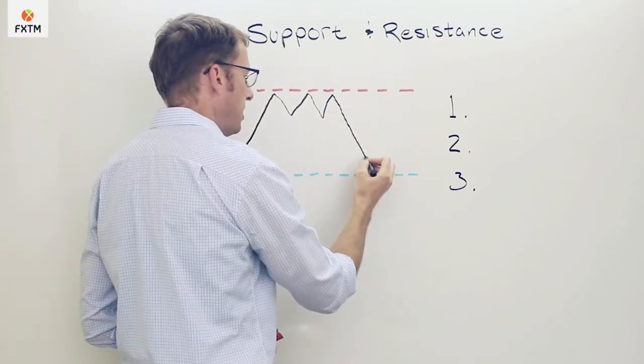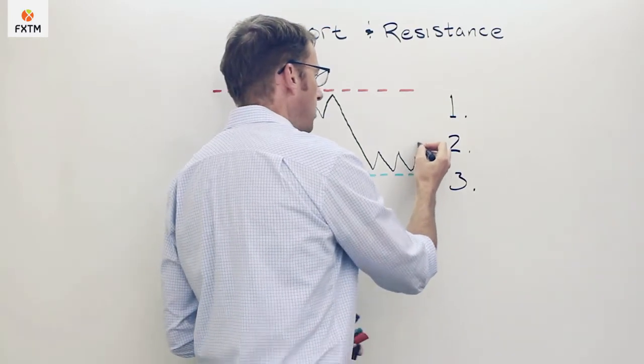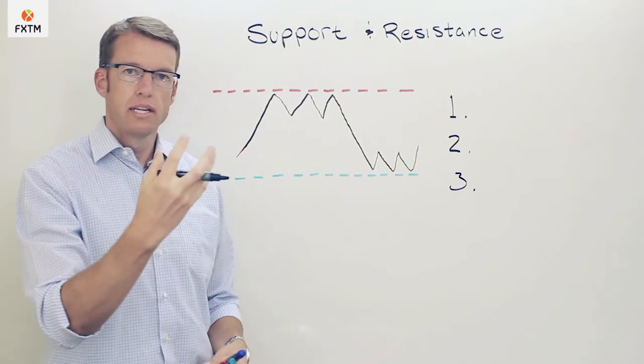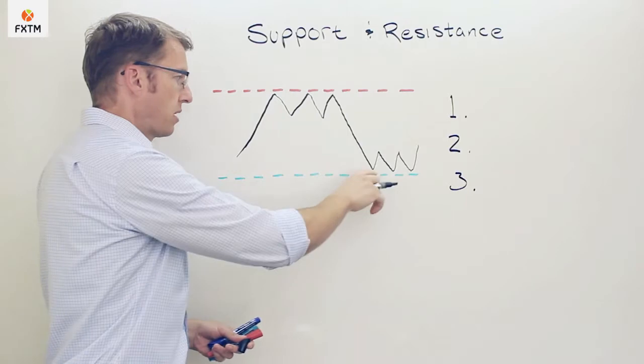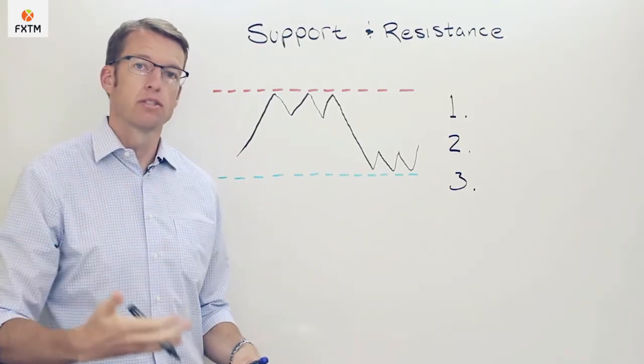Investors would look at that range as a level of resistance or a bit of a ceiling on the price. Now support is very similar in that it is a price floor at which the currency pair continues to approach or nearly reach or maybe even temporarily exceed by a little bit, by a narrow margin.